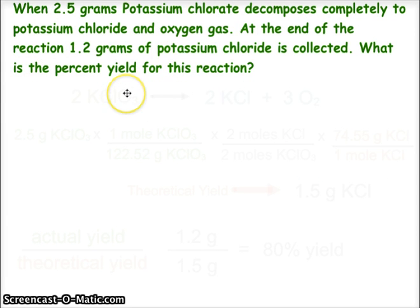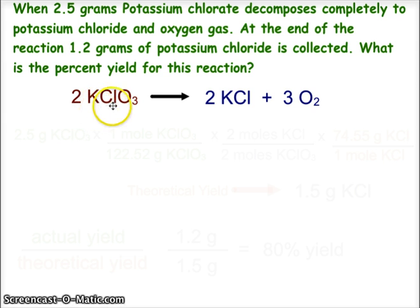For the problem, 2.5 grams of potassium chlorate decomposing to potassium chloride and oxygen, we need to start with that balanced chemical equation. Two moles of potassium chlorate yield two moles of potassium chloride and three moles of oxygen. At the end of the reaction, we are going to end up with 1.2 grams of potassium chloride, and we want to know what will this be as far as percent yield.